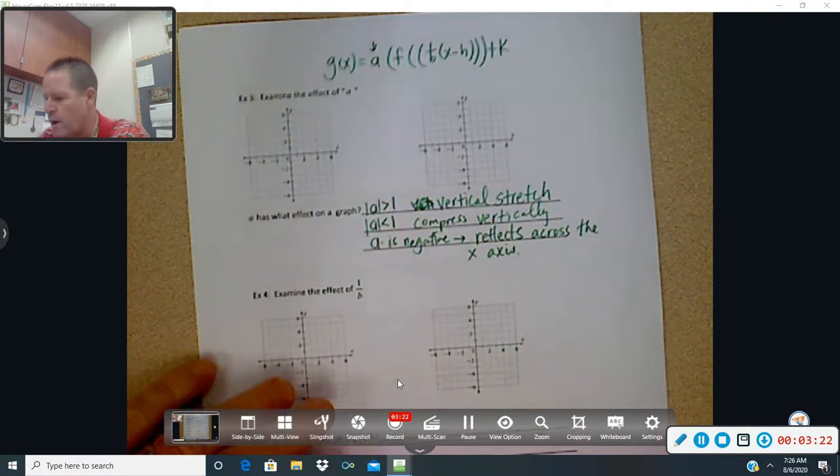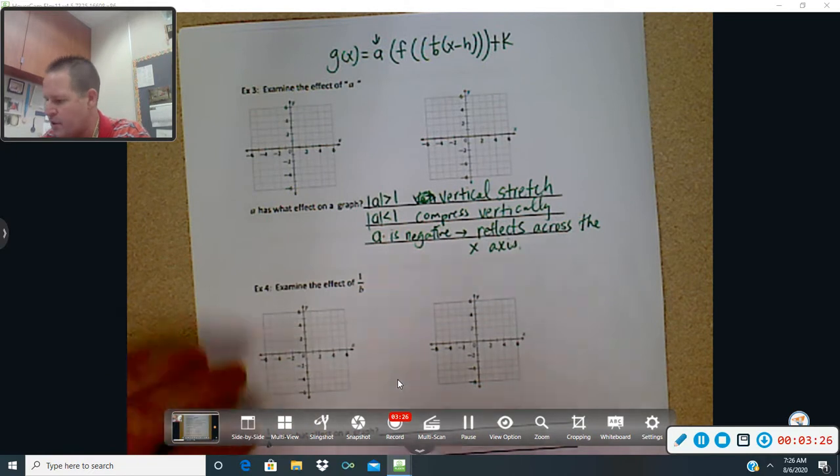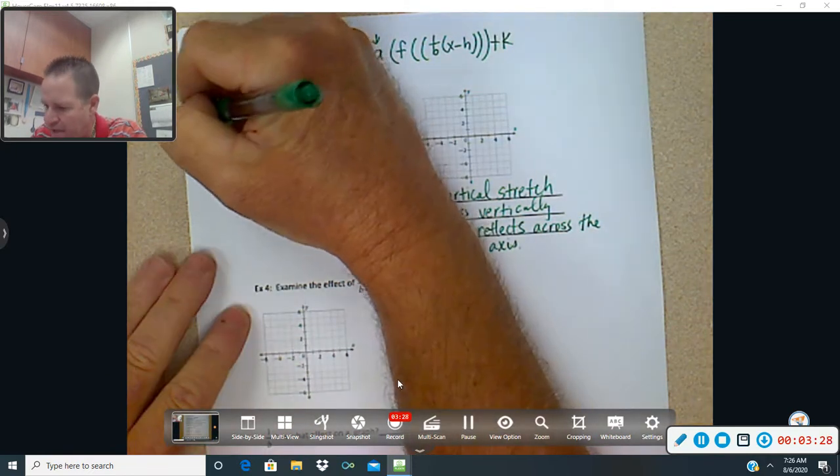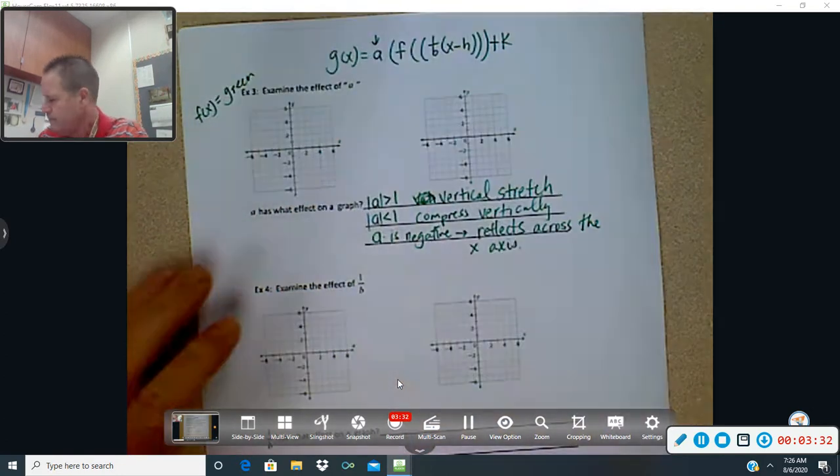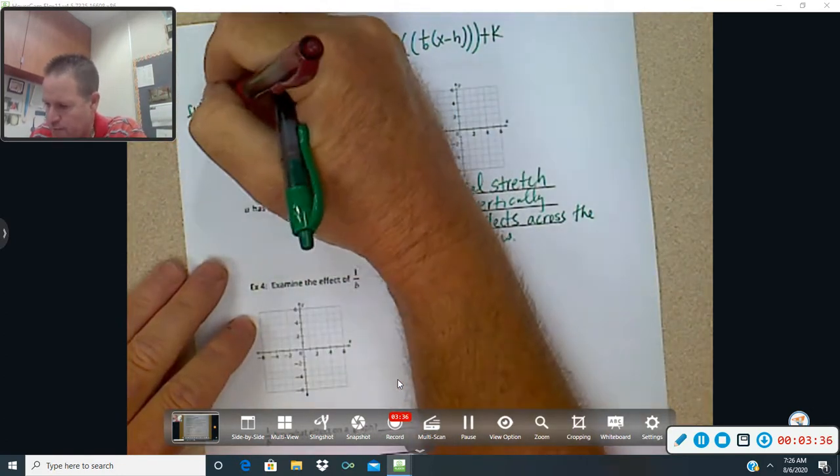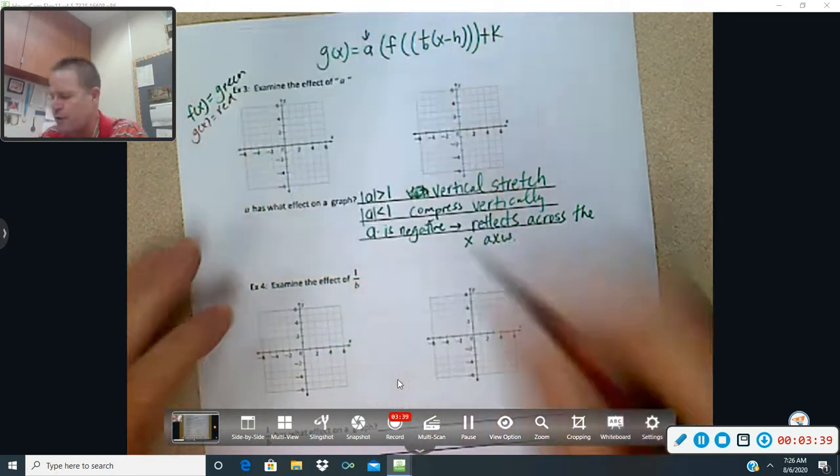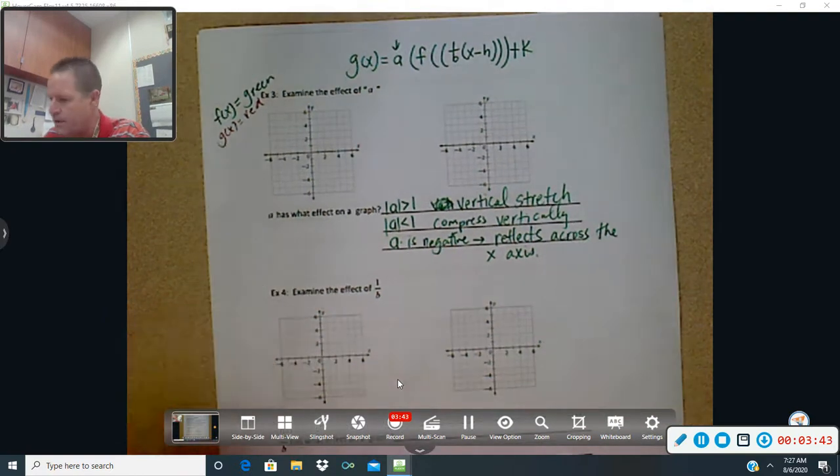All right, so what does this look like in terms of how does an A affect the graph? OK, so again, we've got our green. We're calling the f of x. I'm calling that my green one. And g of x is my red. So hopefully, you still have your two colored pens. If you don't, go ahead and push pause and go grab one really quick.